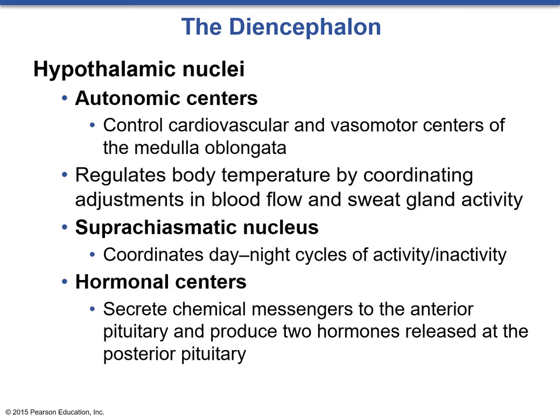The hypothalamus itself has several nuclei: autonomic centers, suprachiasmatic nuclei, and hormonal centers. The autonomic centers are going to control cardiovascular and vasomotor centers of the medulla oblongata. It regulates body temperature by coordinating adjustments in blood flow and sweat gland activity, and it can also work in conjunction with the GI tract, controlling portions of the enteric nervous system to aid in digestion. The suprachiasmatic nuclei help coordinate day and night cycles of activity and inactivity, in conjunction with the pineal gland.